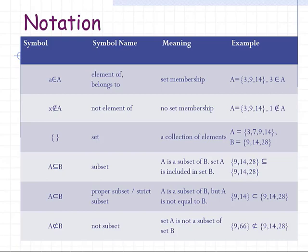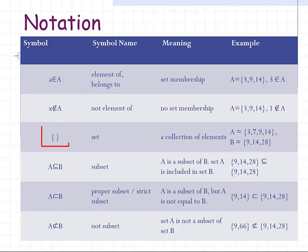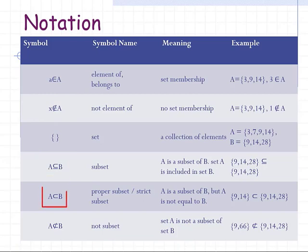In set theory we use many notations. If any element belongs to set A, we write it as 'a ∈ A' meaning the element belongs to A. For example, 3 ∈ A means 3 is an element of A. Other symbols include '∉' for not an element of, '⊆' for subset, '⊂' for proper subset, and '⊄' for not a subset.